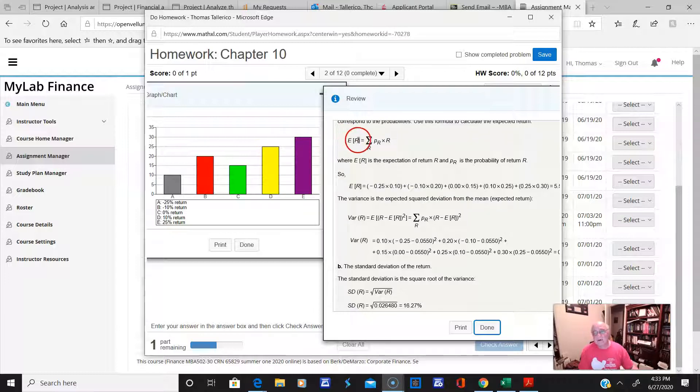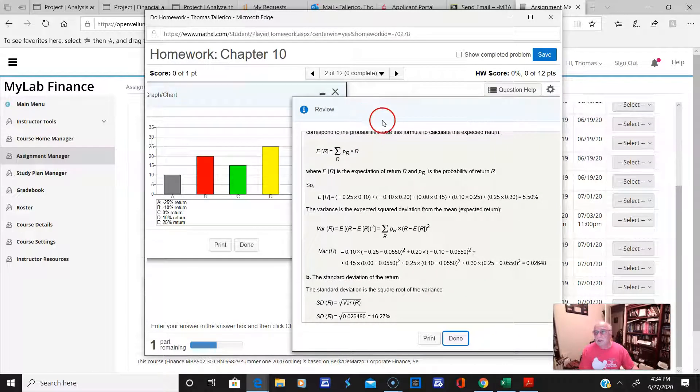So the expected return, that's the first thing, and that should be straightforward. You multiply the probability times the expected return. So you see this was minus 25. You got to be careful here. That's a minus, and that's a minus, and that's a minus, times its corresponding probability.